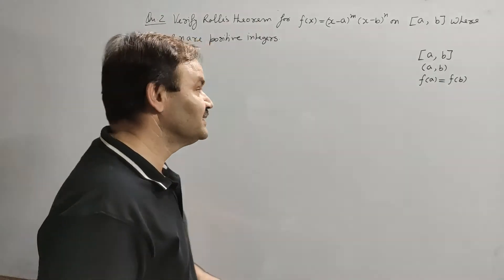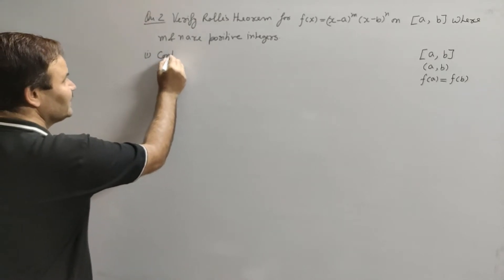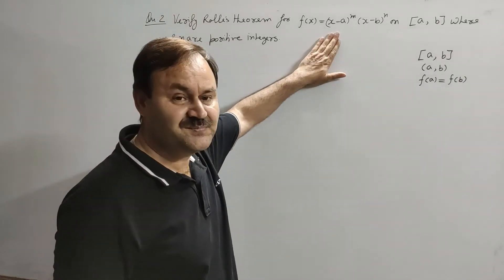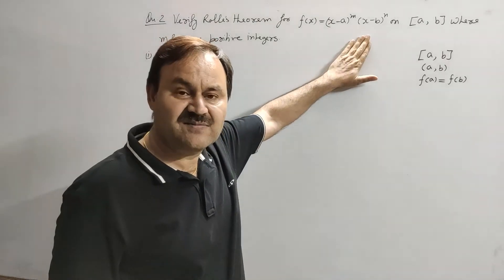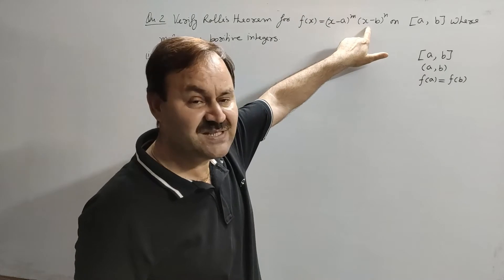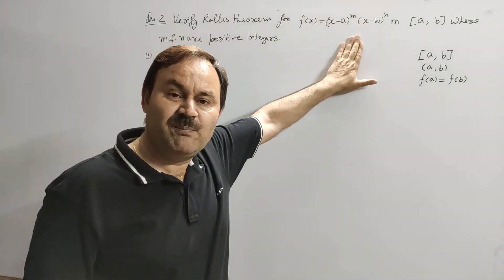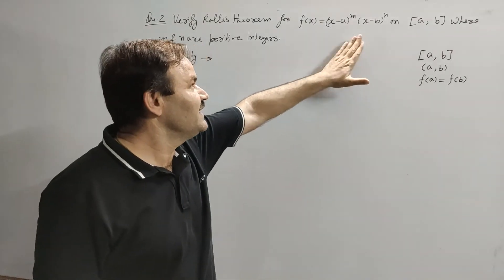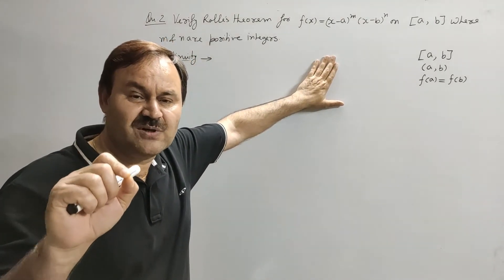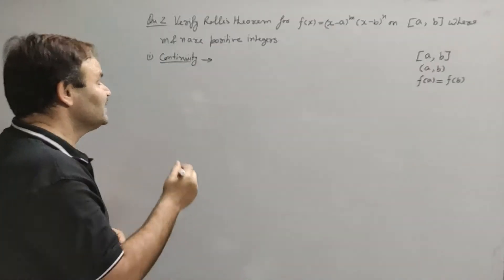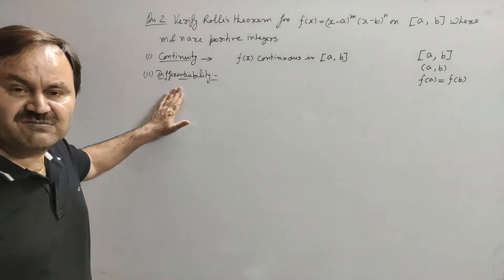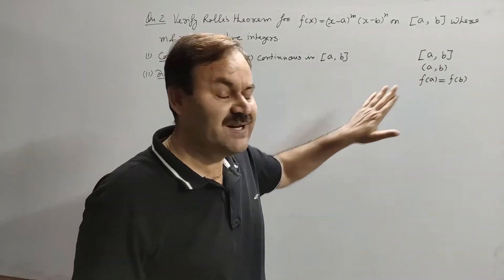First we will test the continuity. If we multiply these two factors and expand using the binomial theorem, the maximum power of x from (x - a)^m will be m and from (x - b)^n will be n, so we get a polynomial of degree m + n. Since it is a polynomial function, and a polynomial function is continuous for all real values of x, the given function f(x) will be continuous in the closed interval [a, b]. Now we test differentiability in the open interval (a, b).